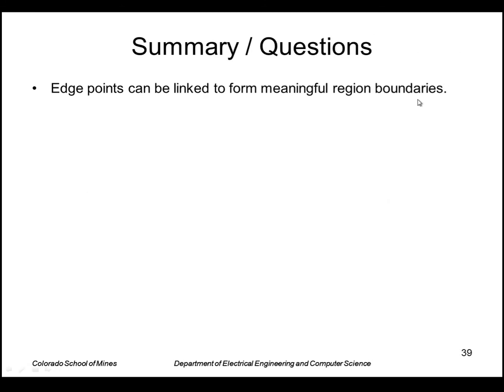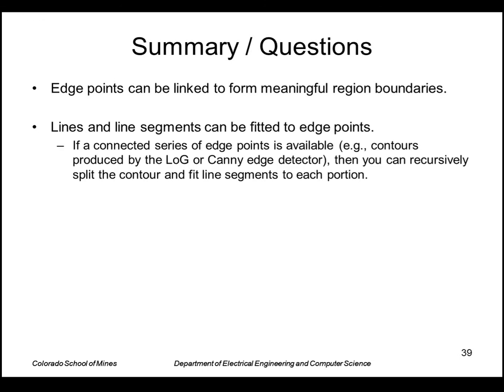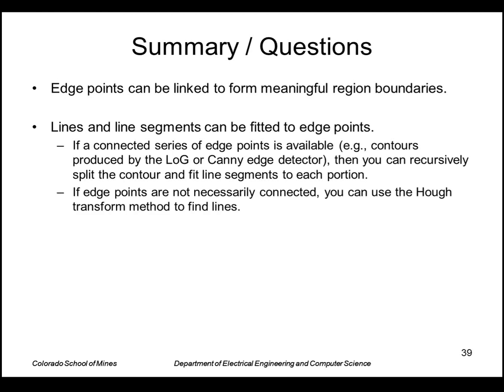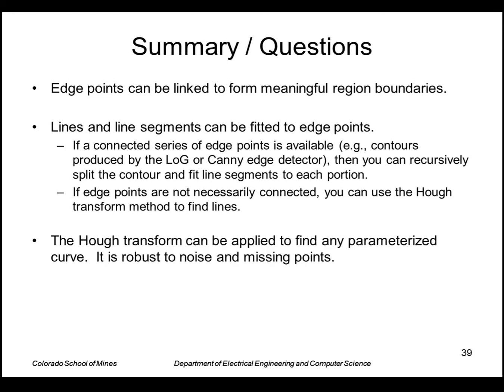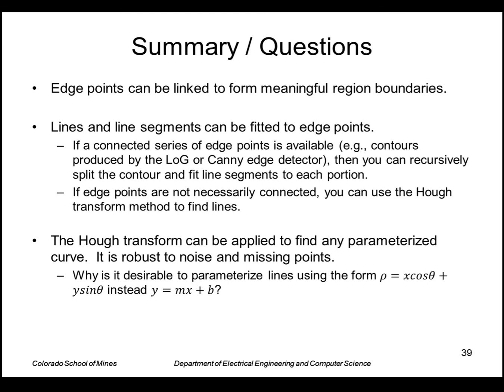In summary: edge points can be linked to form meaningful region boundaries. Lines and line segments can be fitted to edge points. If a connected series of edge points is available — for example, contours produced by the Laplacian of Gaussian or Canny edge detector — you can recursively split the contour and fit line segments to each portion. If edge points are not necessarily connected, you can use the Hough transform to find lines. The Hough transform can be applied to find any parameterized curve and is robust to noise and missing points. Why is it desirable to parameterize lines using rho = x cos θ + y sin θ instead of y = mx + b?